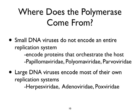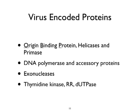Where do polymerases come from? Small viruses do not encode these proteins; rather they encode proteins that help mobilize the host. These include the Papillomaviridae, responsible for warts; the Polyomaviridae, which are tumor promoters in animals and rarely in humans; and the Parvoviridae, which cause rather benign diseases. Large DNA viruses encode most of their own replication systems — these are the Herpesviruses, Adenoviridae, and Poxviridae.